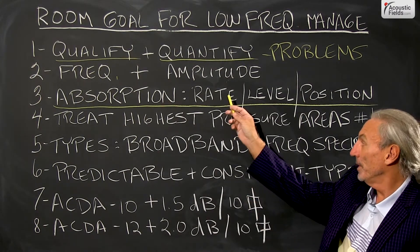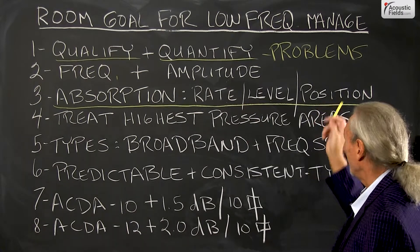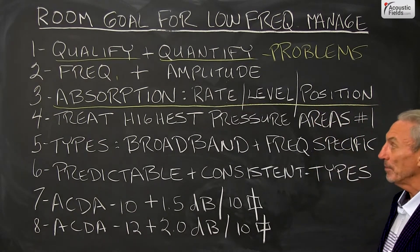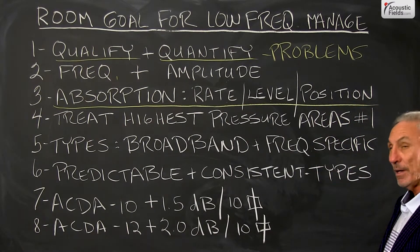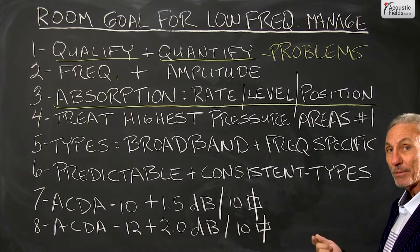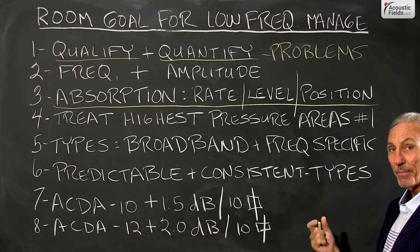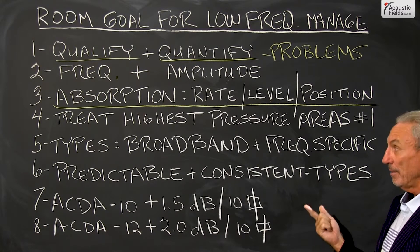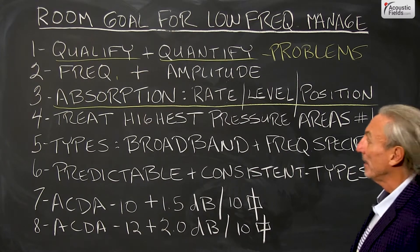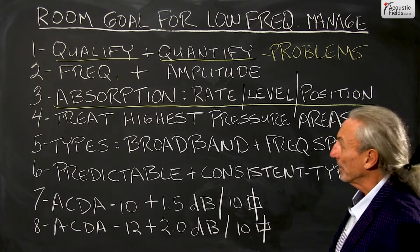The issues we have to look at are rate, level, and position in the room. From past videos, remember the three types of absorbers we have: low frequency diaphragmatic, membrane, and Helmholtz — and they all have their own frequency characteristics.